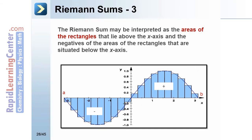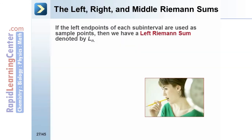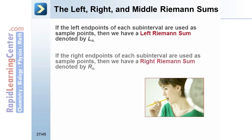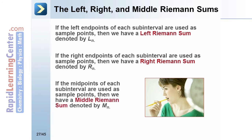The Riemann sum may be interpreted as the areas of the rectangles that lie above the x-axis and the negatives of the areas of the rectangles that are situated below the x-axis. If the left endpoints of each subinterval are used as sample points, then we have a left Riemann sum, denoted by L sub n. If the right endpoints are used, then we have a right Riemann sum, denoted by R sub n. If the midpoints are used, then we have a middle Riemann sum, denoted by M sub n.